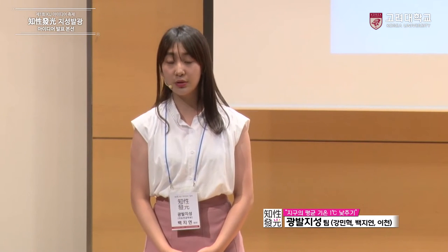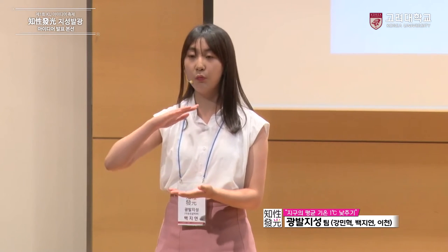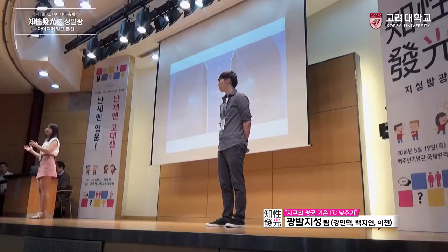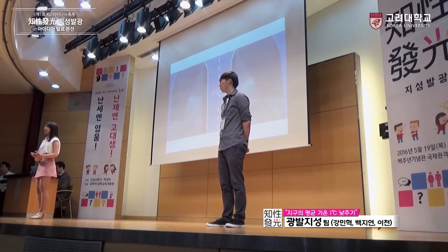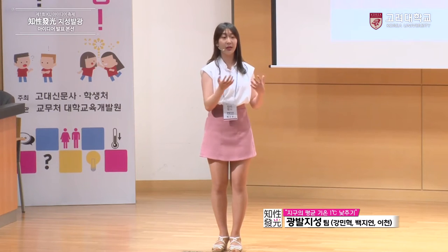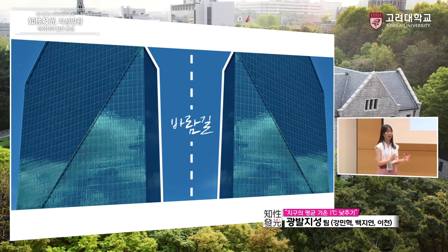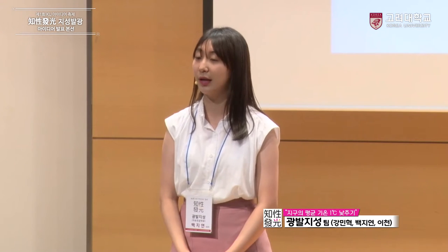이미 우리가 살고 있는 대도시에는 수많은 고층 건물들이 있고, 이것을 함부로 건물 높이 제한을 하거나 고층 건물들을 다 없애버리는 식으로는 할 수 없겠죠. 하지만 필로티 구조를 이용한다면 그 1층 사이로 바람이 통하는 길이 만들어지고, 이러한 바람길을 만드는 것 자체는 건물 자체의 온도를 크게 절감시켜 여름철 냉방 전력 절감에도 큰 기여를 하고, 환경적으로도 굉장히 이점이 있습니다.